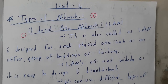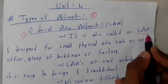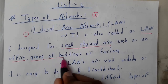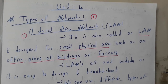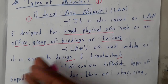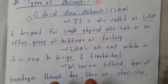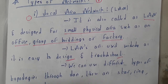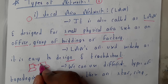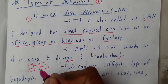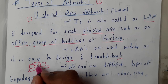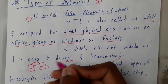LAN is designed for small physical areas such as offices, groups of buildings, and factories. LANs are widely used because they are easy to design and troubleshoot. For example, if you have two computers in your house and want to transfer 100 or 200 GB of data, using a pen drive repeatedly would be an issue. So these two computers will be connected with a wire, also called an Ethernet wire or LAN wire.